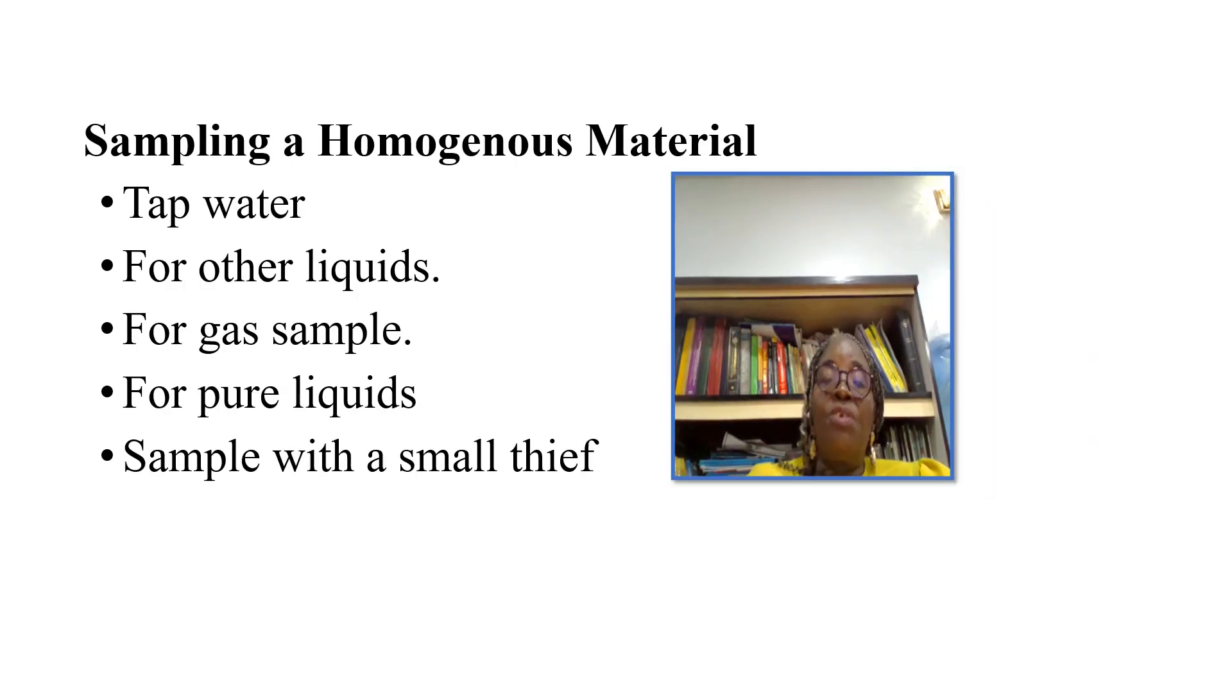Sampling a homogeneous material, liquids and gases. A homogeneous material is a mixture in which the composition is uniform throughout the mixture. For example, sugar in water and salt added to water and also blood. We can use a grab sampling. That is one sample taken at random that can be used for homogeneous material. For example, if we want to analyze tap water, we'll allow the tap to run for some time, maybe five minutes, and we'll clean the mouth of the tap with cotton wool before filling the container.